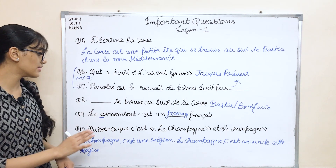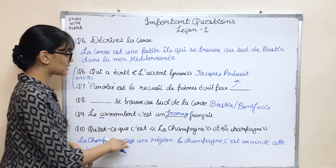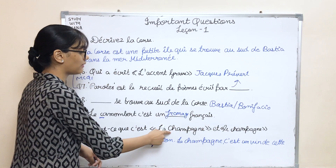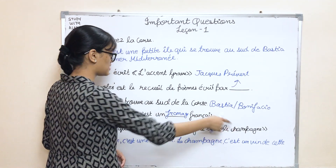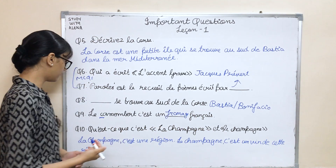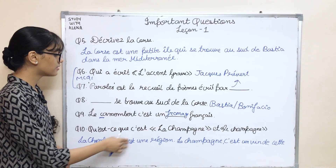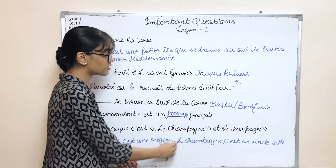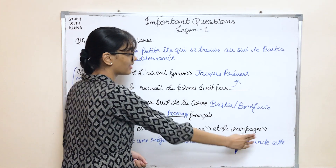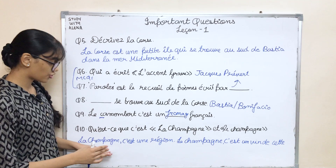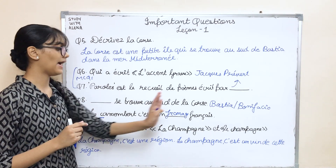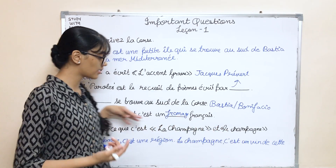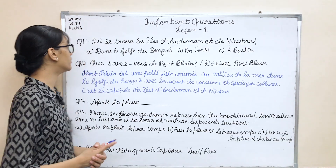Another way this question can come is: 'Qu'est-ce que c'est la Champagne et le Champagne?' — one with a capital C, one with a small c. La Champagne c'est une région — it's a place, a region in France. Le Champagne c'est un vin de cette région — it's the wine from this region.